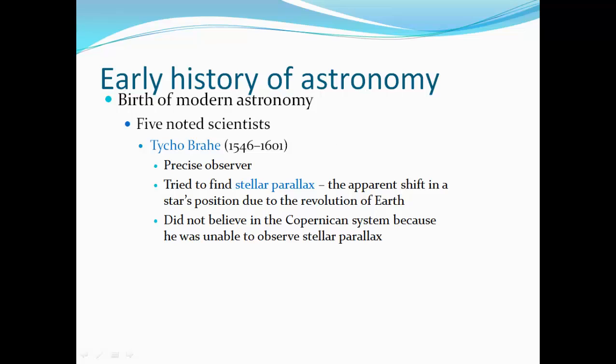Now Tycho Brahe, 1546 through 1601, a very precise observer, he tried to find stellar parallax, the apparent shift in a star's position due to revolution of the Earth. He didn't believe in the Copernican system because he was unable to observe the stellar parallax that he was expecting.